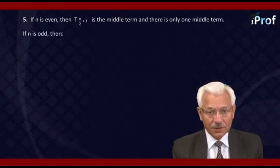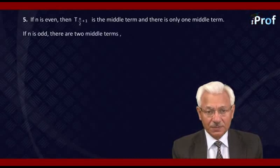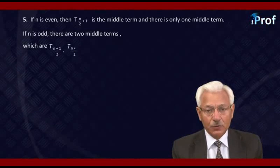But if N is odd, there are two middle terms, which are T(N+1)/2, and T(N+1)/2+1, which is also written as T(N+3)/2.